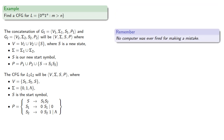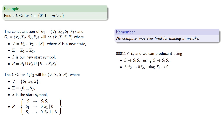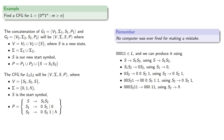Remember, no computer was ever fired for making a mistake. Let's make sure these production rules actually produce strings in our language — we know that 00011 is in our language. Starting from the start symbol, we apply the rule start symbol produces S1 S2. Then S1 S2 produces 0 S2 using the rule S1 produces 0. Then 0 S2 produces 0 0 S2 1 using S2 produces 0 S2 1. Then applying S2 produces 0 S2 1 again gives 0 0 S2 1. Finally, applying S2 produces lambda gives 0 0 1 1, completing the derivation of 00011.